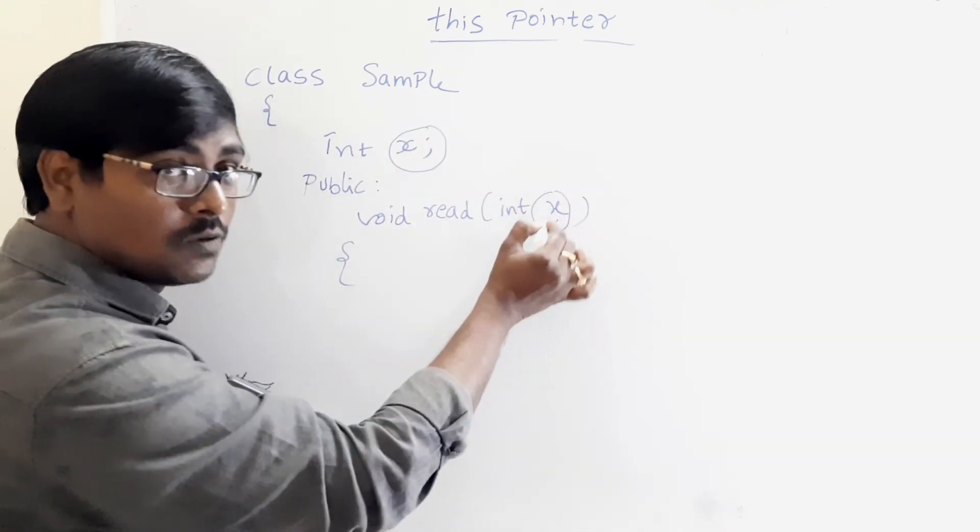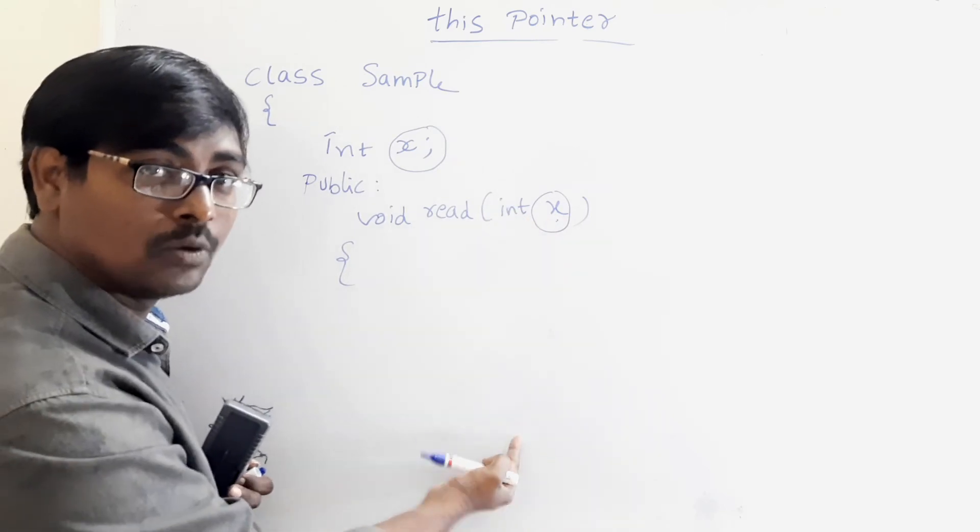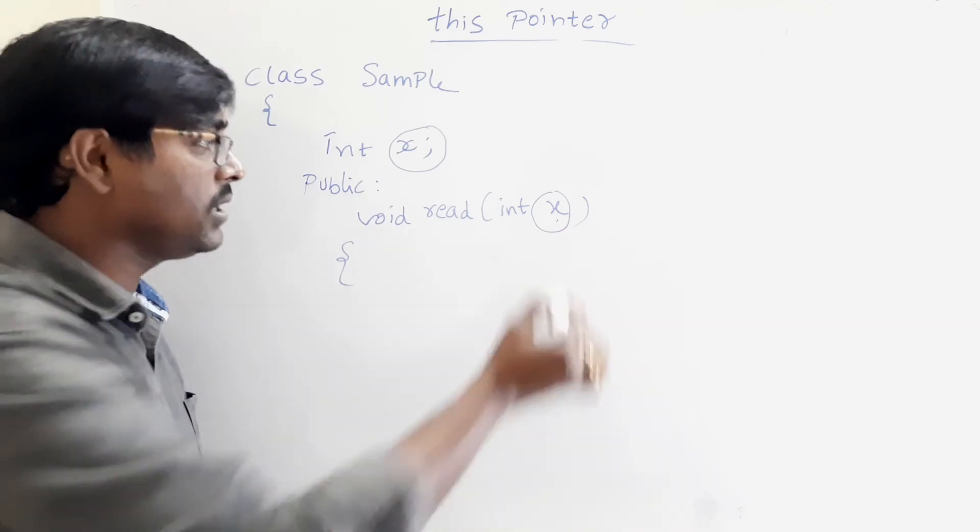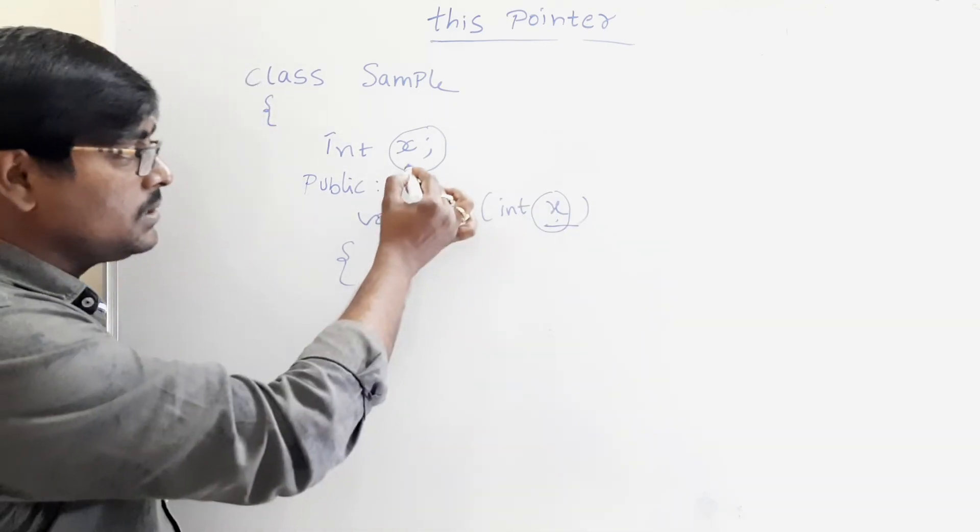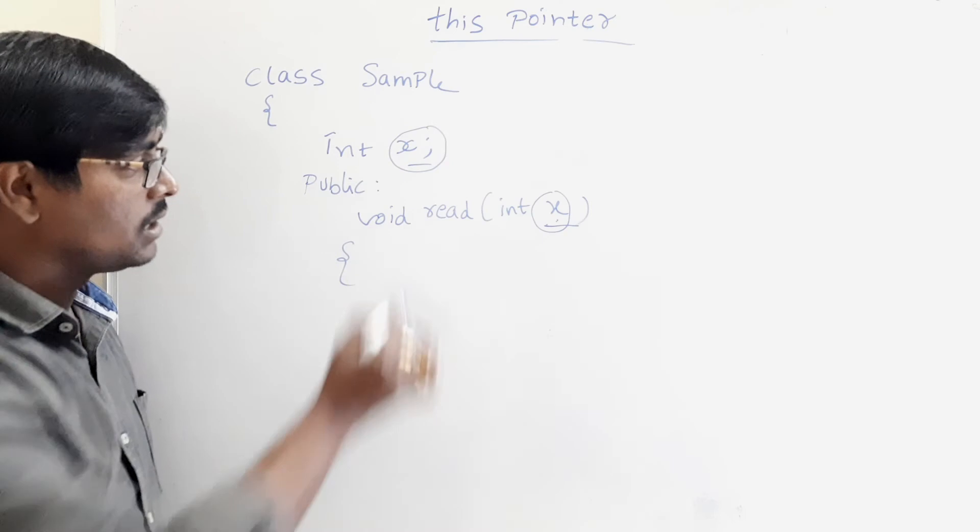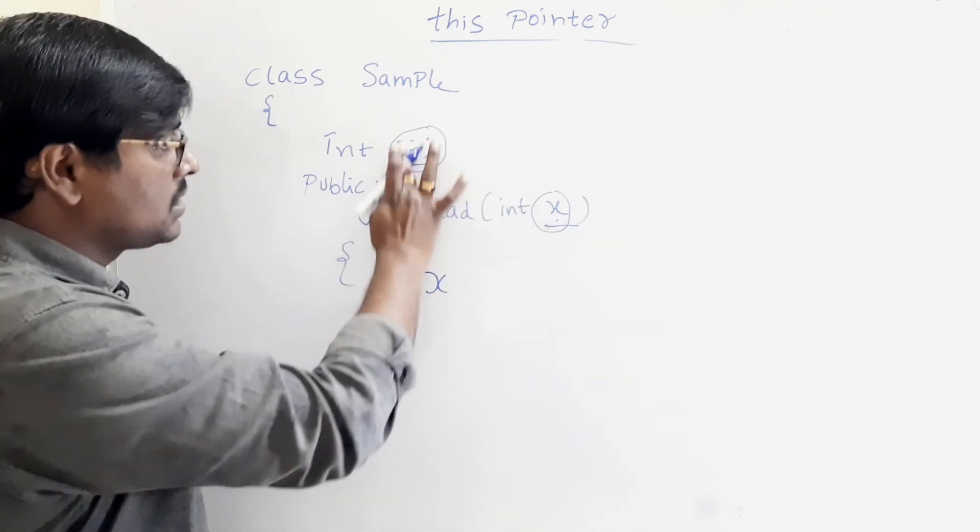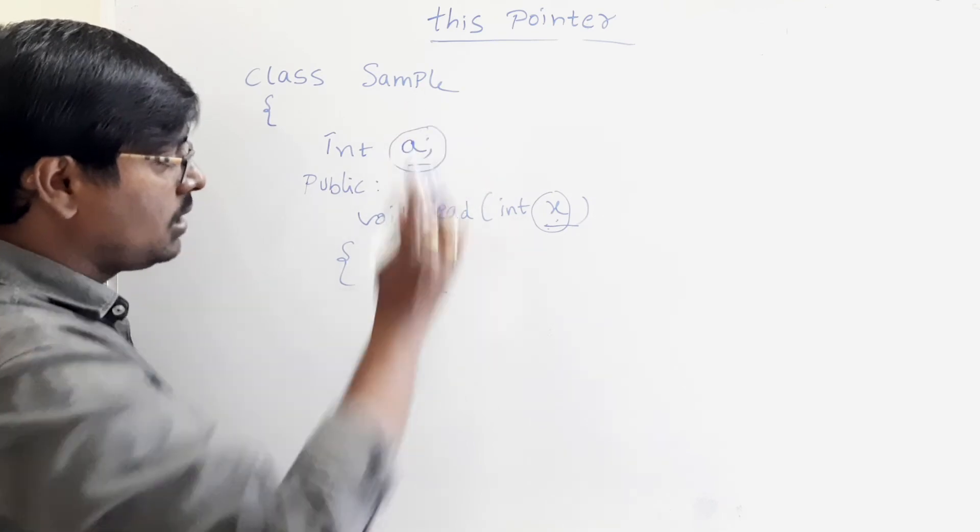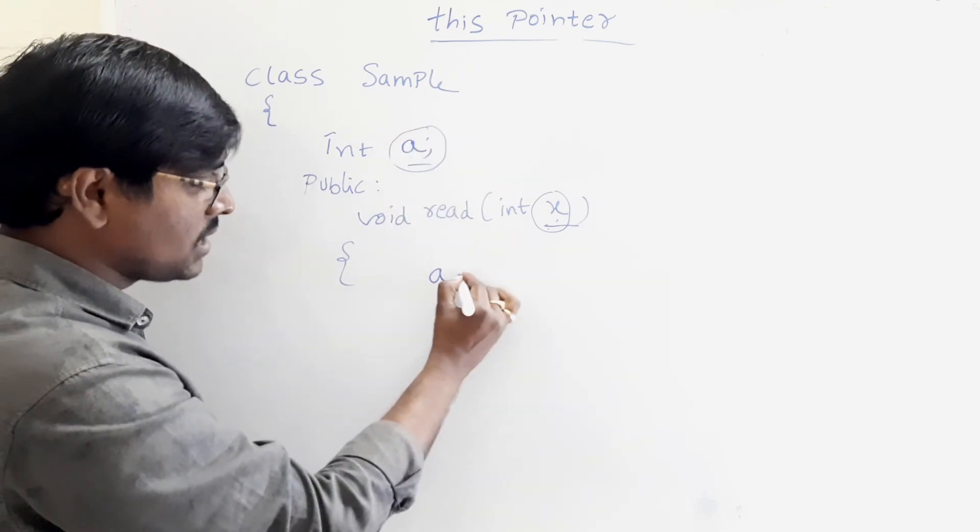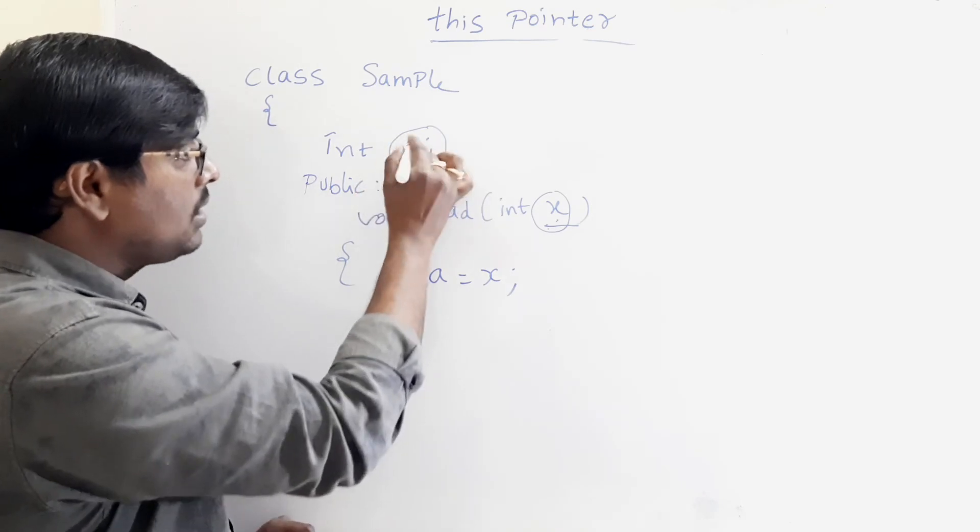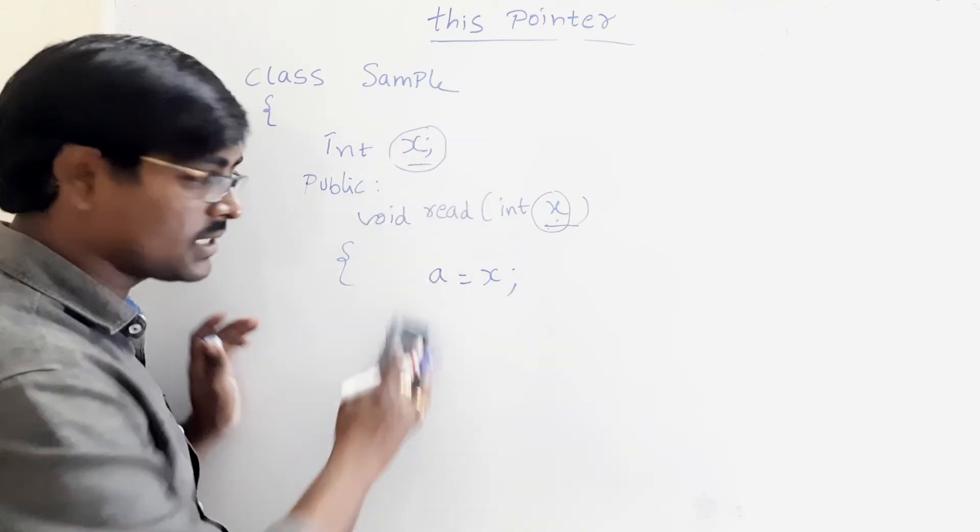That is, this value is passed by using objects. This is object x. This is local variable x. If both the names are same, how are you writing? For example, if you have a variable a, you can write a is equal to x. But here both the names are same, x and x.